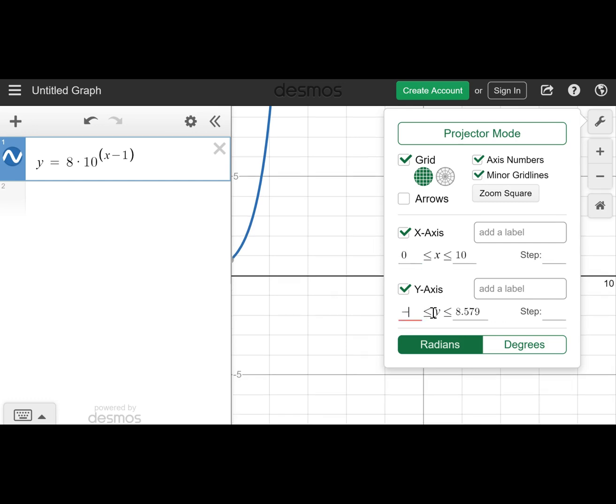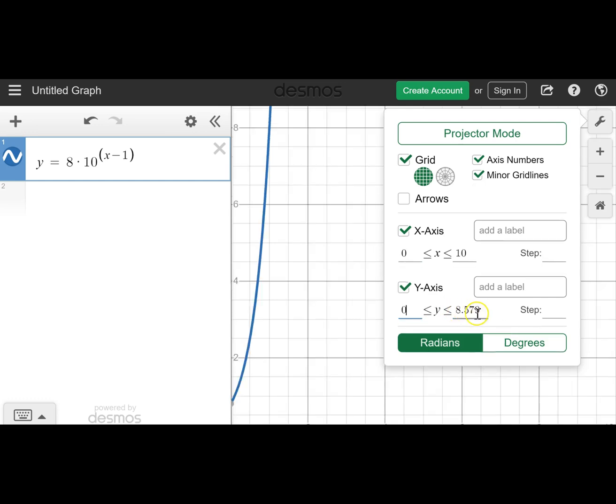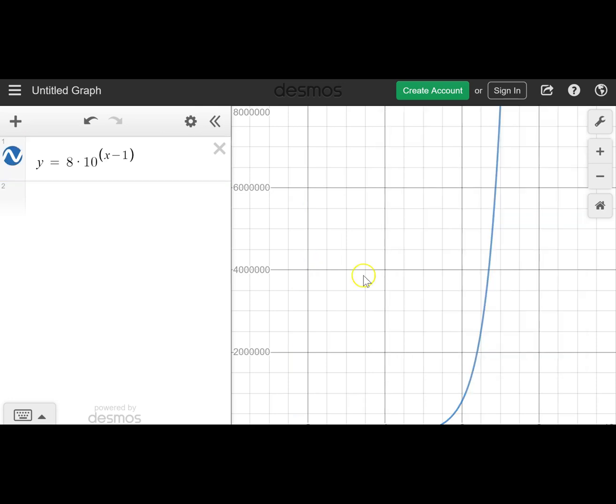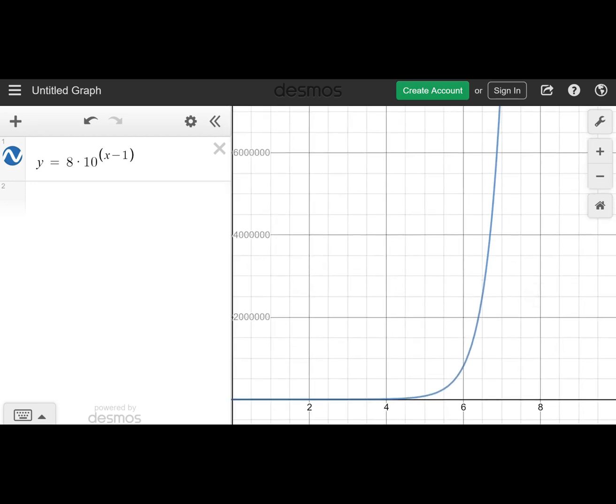We started with zero emails and we got all the way up to 8 million emails. So we can make our Y maximum here to be 8 million. And now we get a nice picture of this graph. And we can see the way that a geometric sequence and its growth looks on a graph. And this is called exponential growth, which we'll talk much more about in the next module.